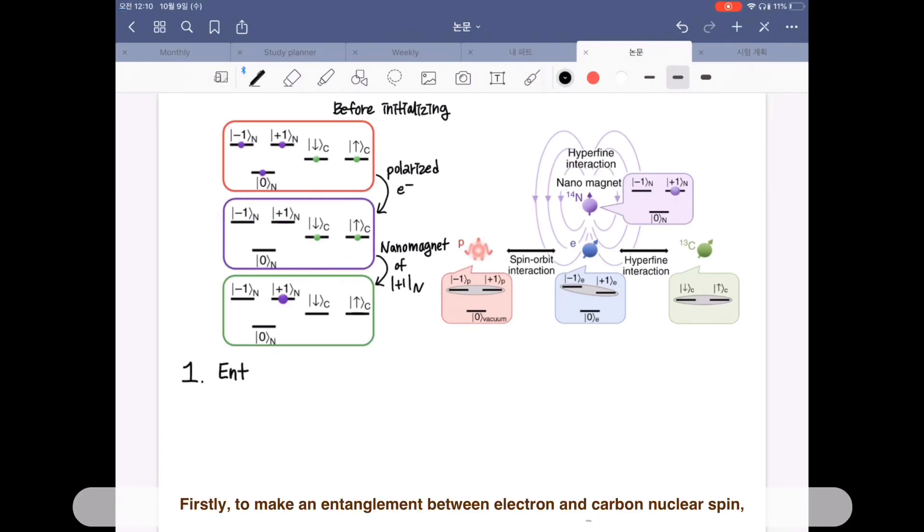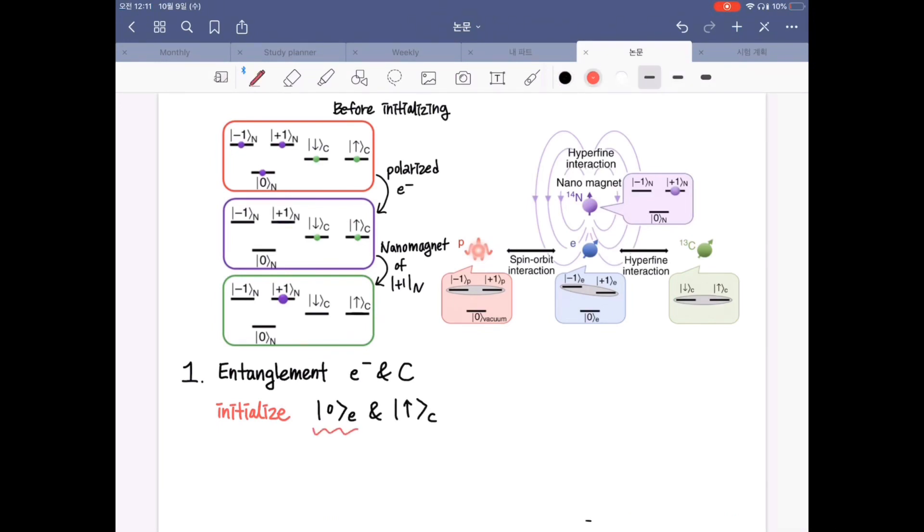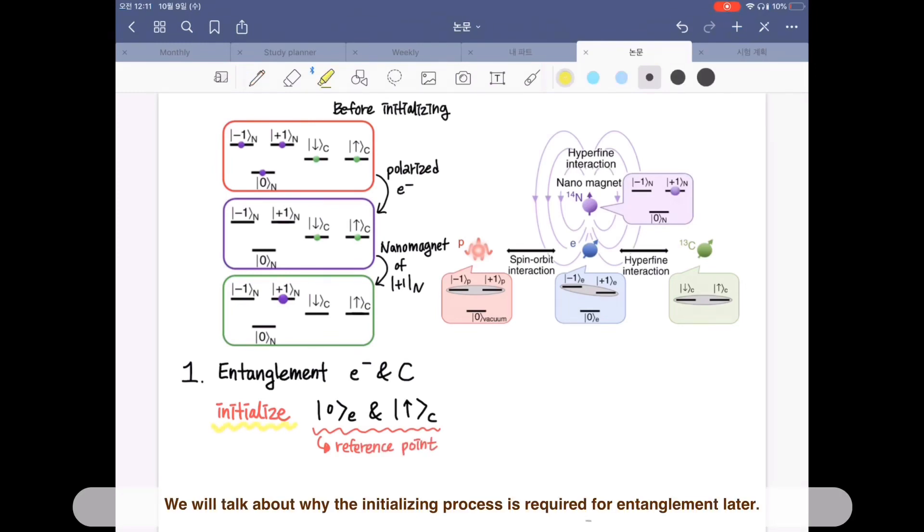Firstly, to make an entanglement between electron and carbon nuclear spin, we first have to initialize them into zero state of electron and up spin of carbon. This will be the reference point of this experiment. We will talk about why the initializing process is required for entanglement later.